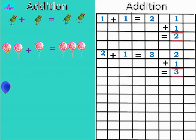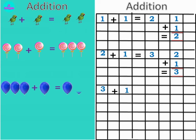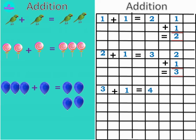Now balloons. One, two, three. So how many balloons are here? Three plus one. Three plus one equals to four. Let's count: one, two, three, four. So three plus one is equals to four. Three plus one is equals to four.